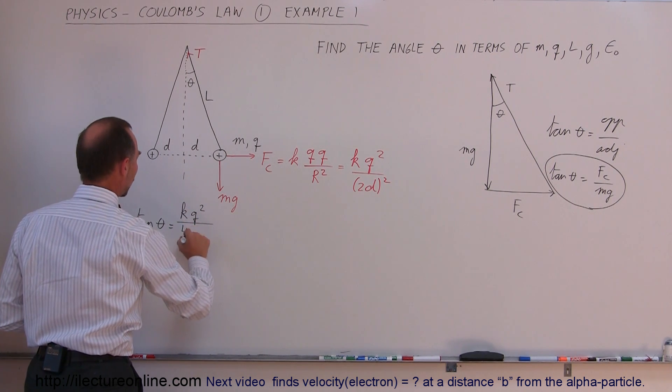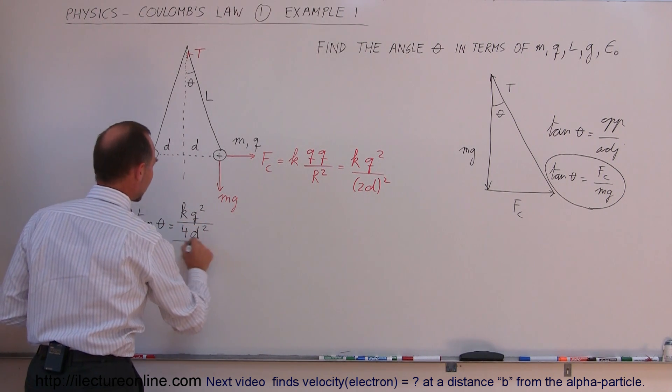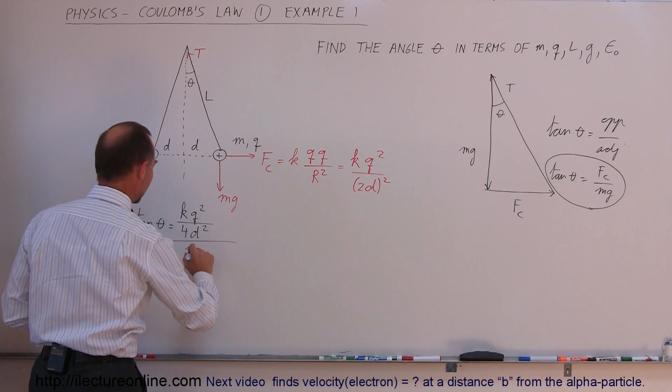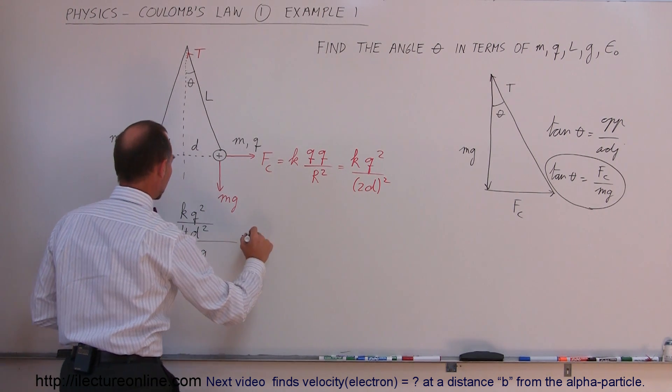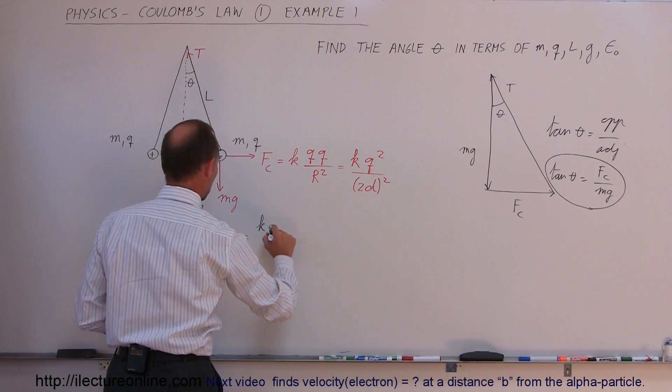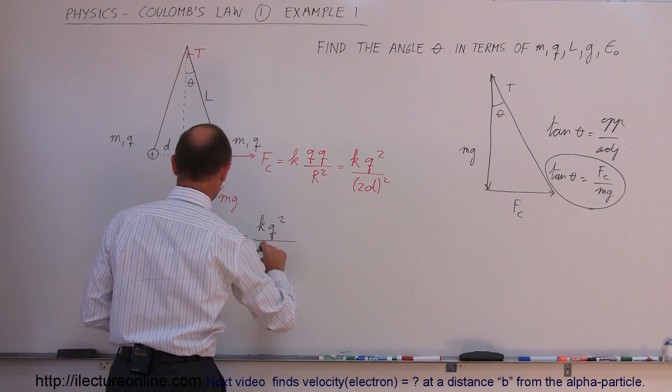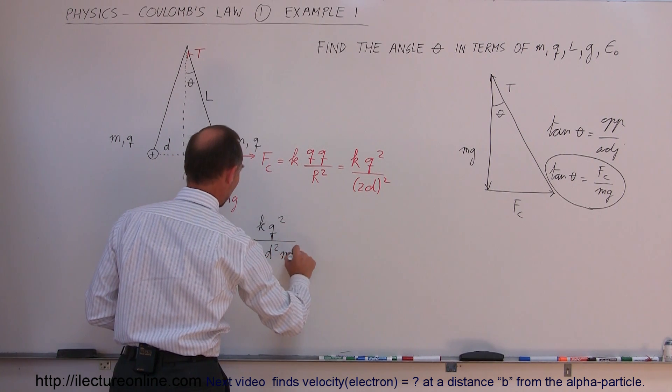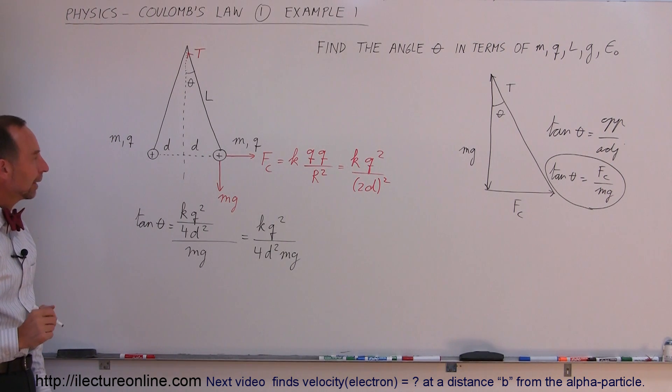We can write the tangent of theta is equal to the Coulomb force, which is K times Q squared divided by 4D squared, and we're going to divide the whole thing by mg, which is equal to K Q squared divided by 4D squared mg.